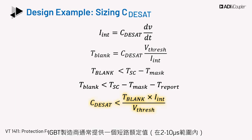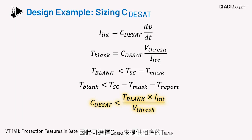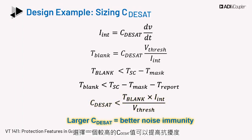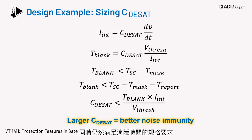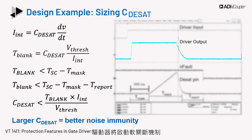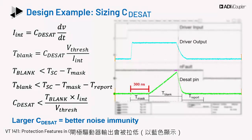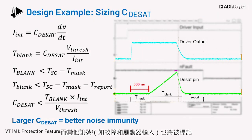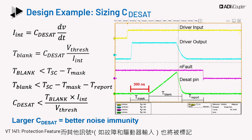IGBT manufacturers often have a short circuit rating in the 2 to 10 microsecond range, and thus CDSAT is chosen to provide T-blank accordingly. Choosing a higher value of CDSAT improves noise immunity, and we can choose a larger capacitor while adding an external pull-up resistor to increase the capacitor charging current and still be within spec for the blanking time. The figure shows the gate driver output being pulled low as the driver enters a soft shutdown mechanism when the DSAT pin voltage exceeds the threshold. Other signals such as the fault and the driver input are also labelled.